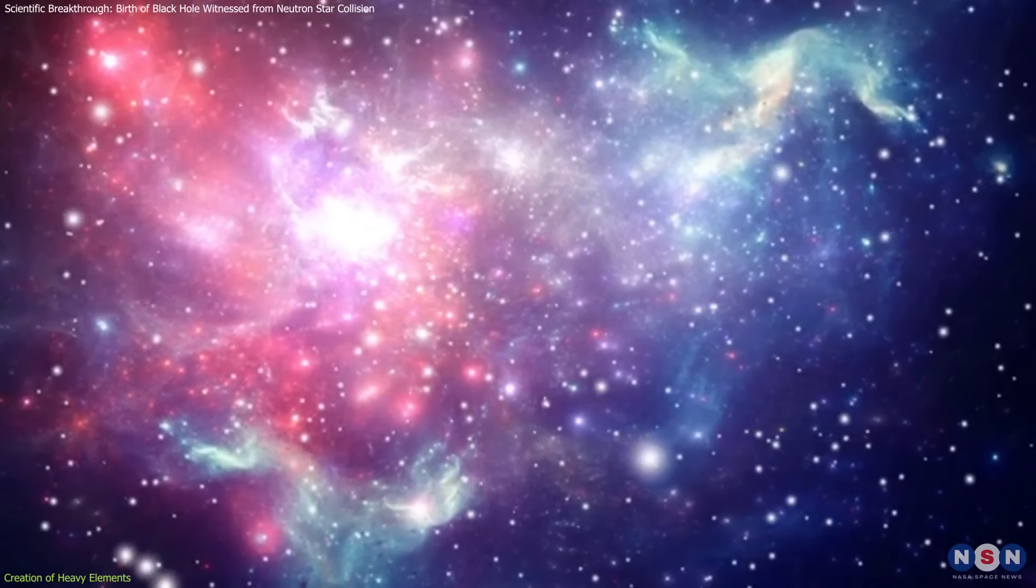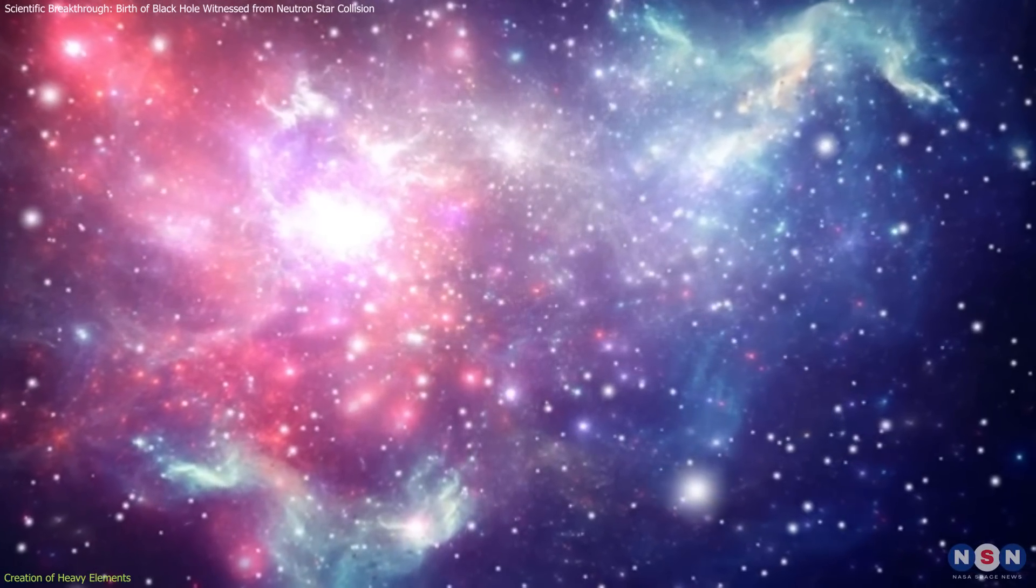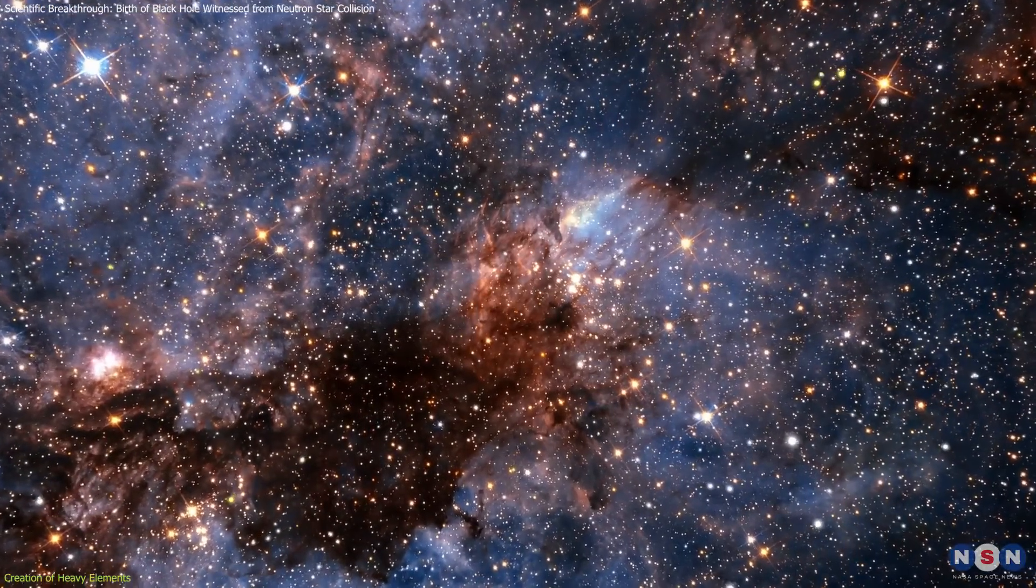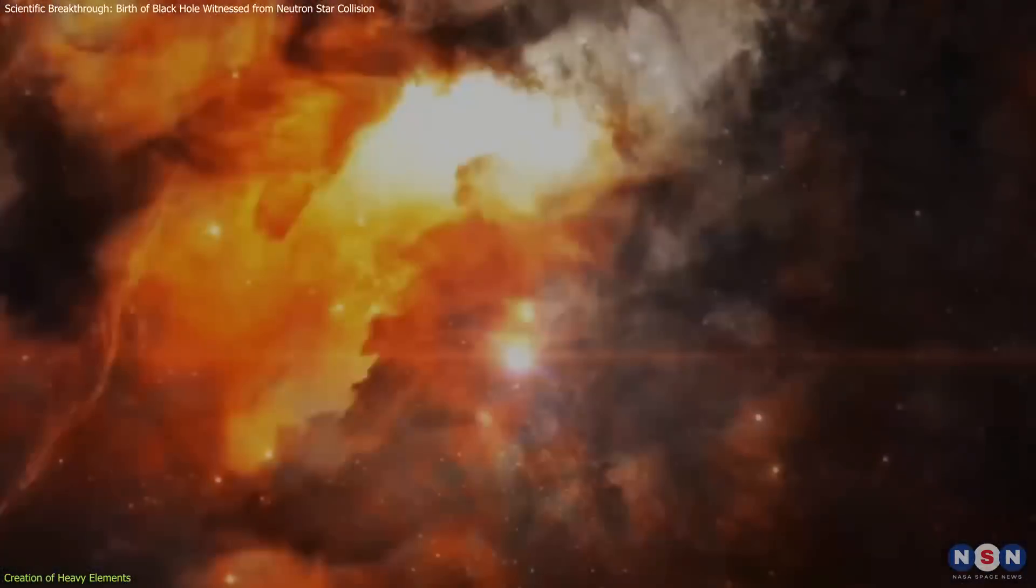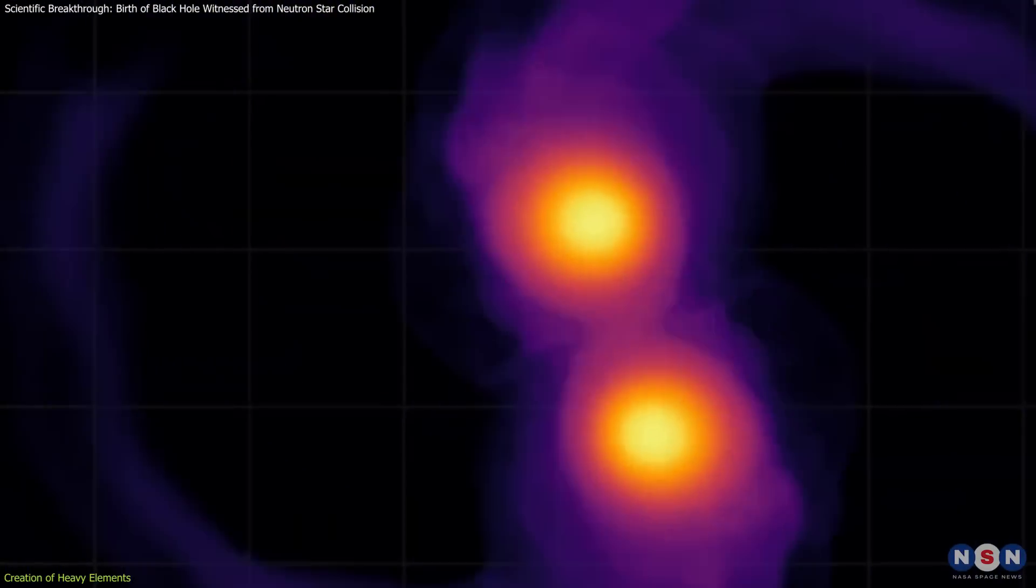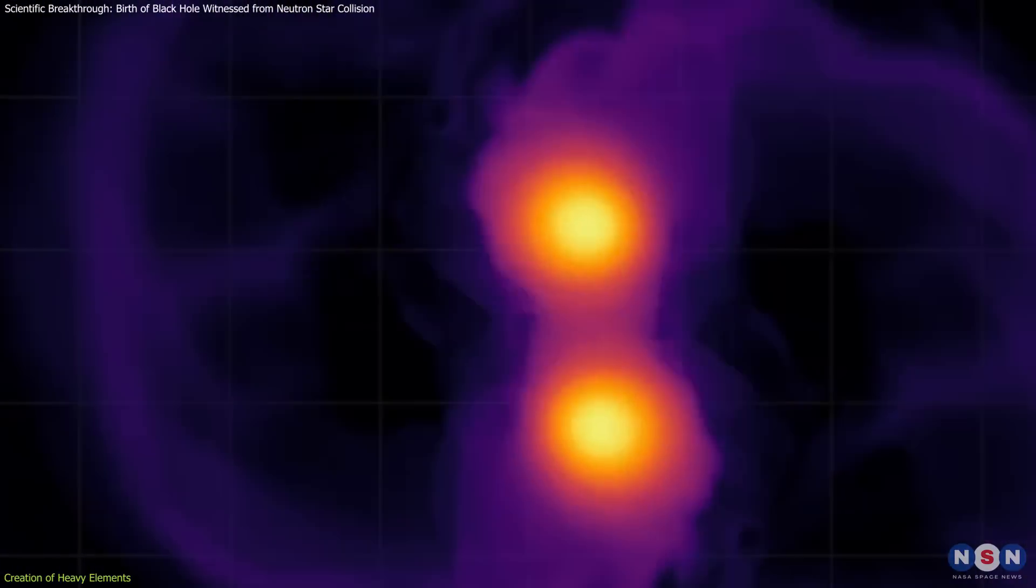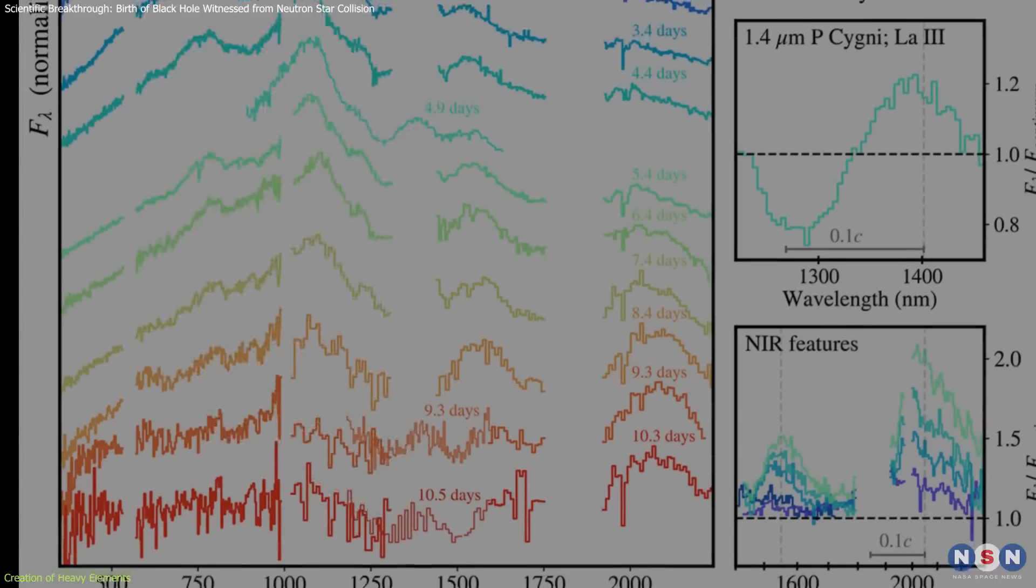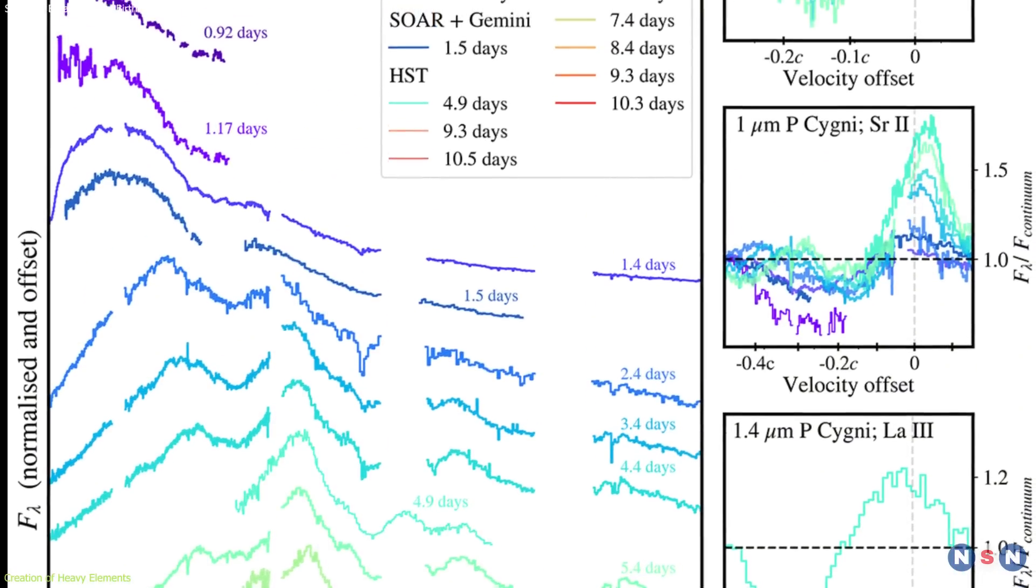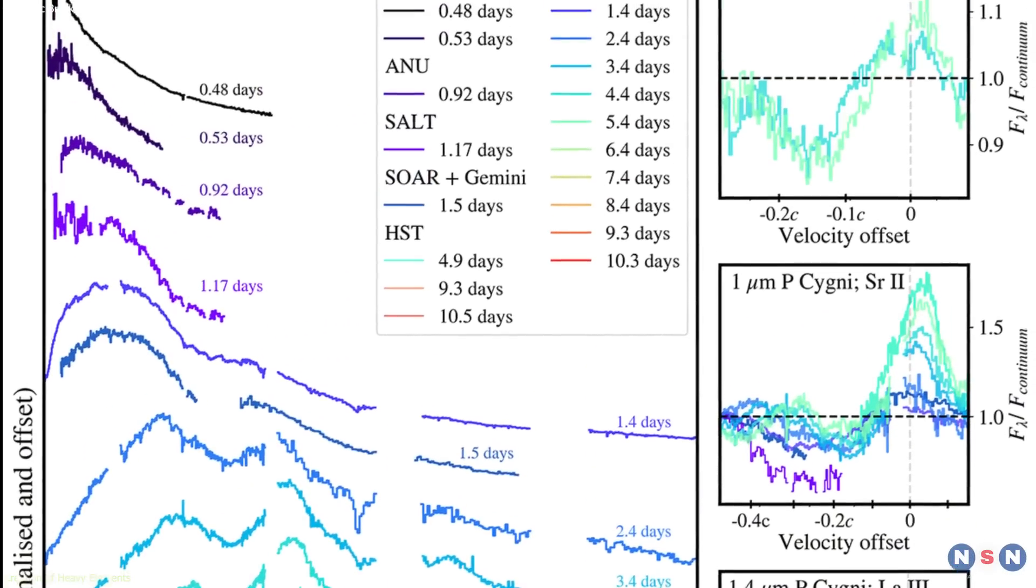This enhances our models of element formation, especially for those elements heavier than iron. These are elements that can't be made in ordinary stars. They need the extreme conditions of a supernova, or a kilonova. Before, scientists could only theorize about this process based on computer models. Now, they've seen it happen, and they have concrete data on the temperature, speed, and composition of the matter involved.